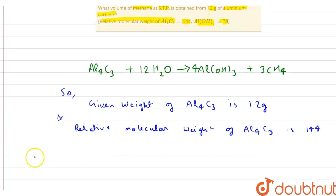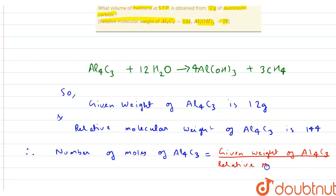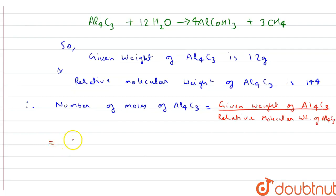So therefore, number of moles of Al4C3 will be determined as given weight of Al4C3 upon relative molecular weight of Al4C3, that is 12 upon 144.